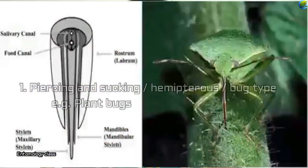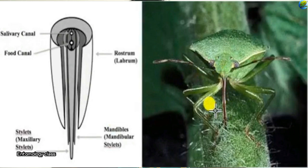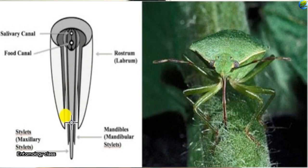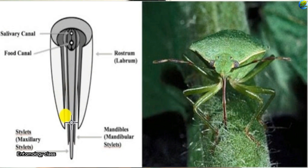Now let us see the insects of the Haustellate type with the stylets. The first stylet type is the plant bug type, otherwise known as the hemipteroid type. In this type the stylet is made from the maxilla and mandible — each is turned into a stylet. There is a pair of mandibles and a pair of maxillae, and combined together each forms its own stylet, making four stylets in total. These stylets are kept under the groove formed by the labium, which acts as the lower lip formed into a groove.